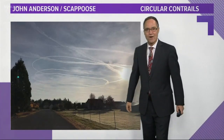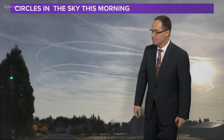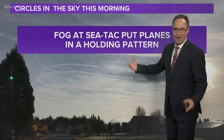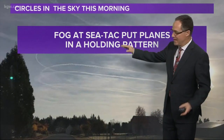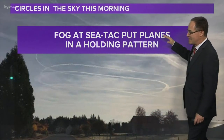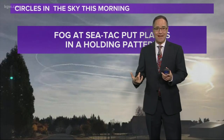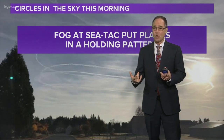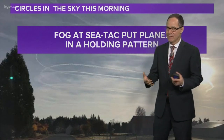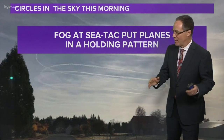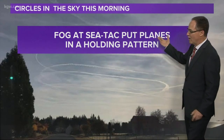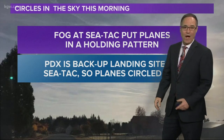So what are the physics behind this? Well, here's the deal. When you get these circles in the sky, first of all, there was fog at Sea-Tac, which put the planes in a holding pattern. Visibility at Sea-Tac several times this morning was down to a quarter of a mile — they won't land planes if they can't see the runway.